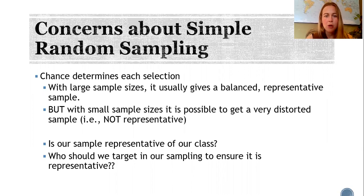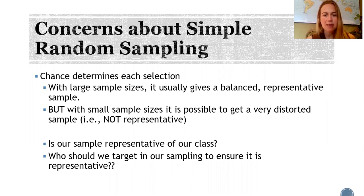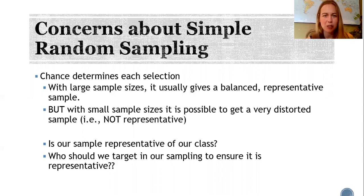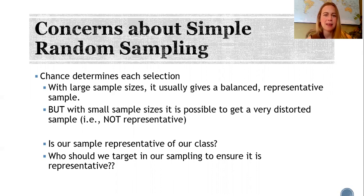With this method, it's up to chance to determine who participates. With larger sample sizes, this usually gives a balanced, fairly representative sample, but with small sample sizes it's possible to get a very distorted sample. For example, just by chance the first 30 students on the class list might all be girls who live at home, and the amount of sleep they get might not be representative of males or students living with roommates.